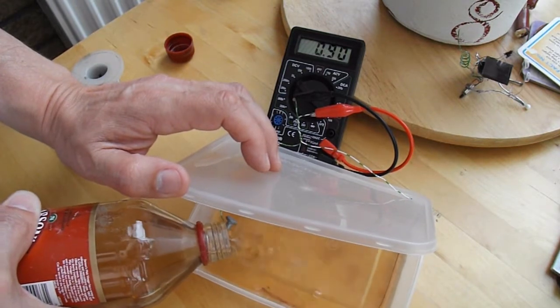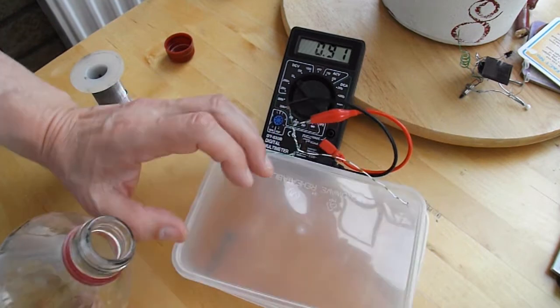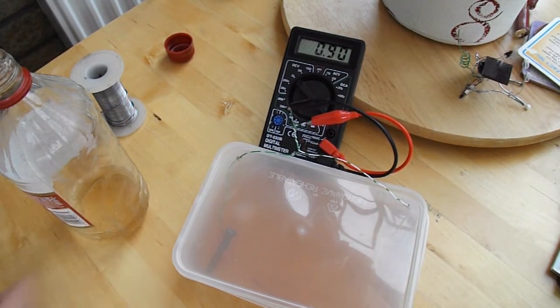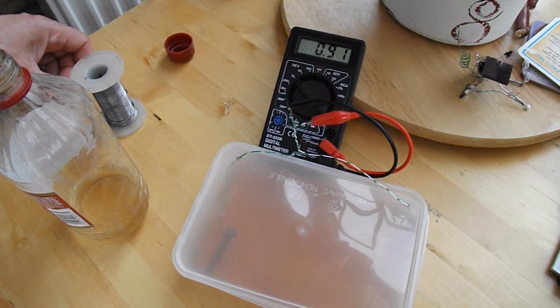Well that's not bad. So, hopefully you can see that, 0.9 of a volt. In fact that's actually more than we're getting out of the lemon battery at the moment.